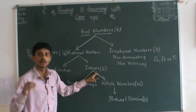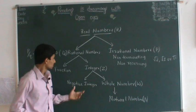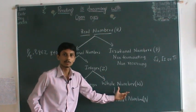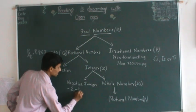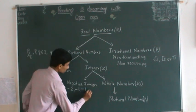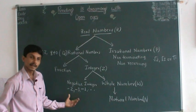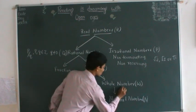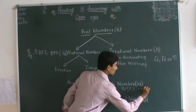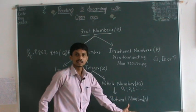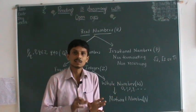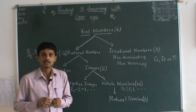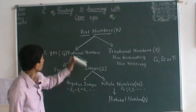Rational numbers are divided into fractions and integers. Fractions are numbers in the form P by Q, where P and Q are integers and Q is not equal to 0. Integers are numbers where the fraction has denominator equal to 1. Integers are divided into negative integers and whole numbers. Negative integers are for example minus 1, minus 2, minus 3. Whole numbers are the positive integers and 0: 0, 1, 2, 3, and so on. Natural numbers are simply the counting numbers starting from 1, 2, 3, and so on.